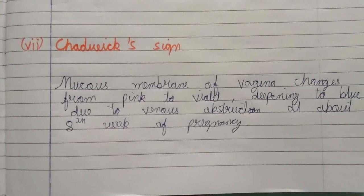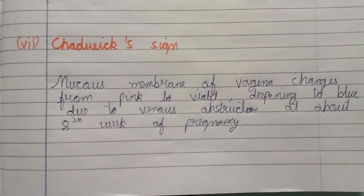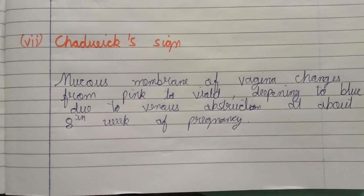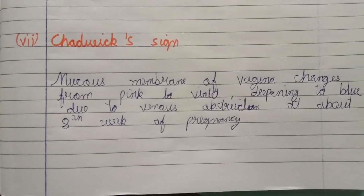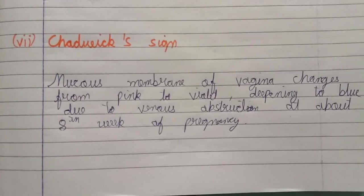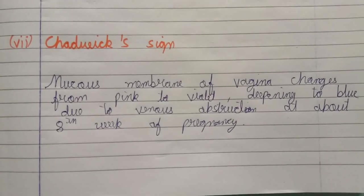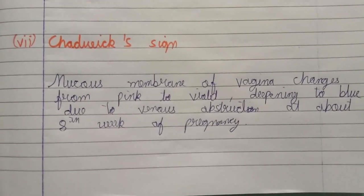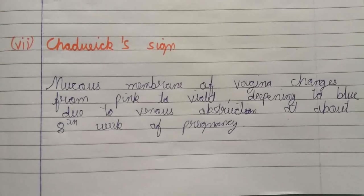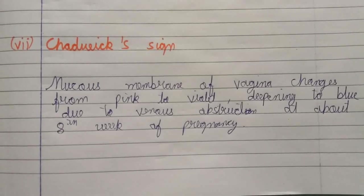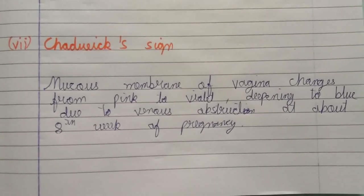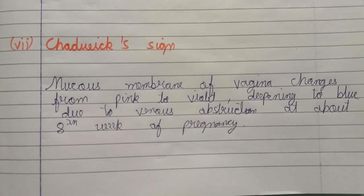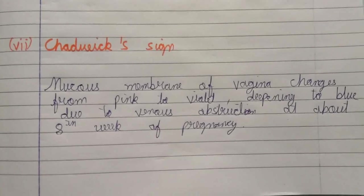The sixth sign is Chadwick sign, which is a very important sign. The mucous membrane of the vagina changes from pink to violet and then deepens to blue. This occurs due to venous obstruction at about the eighth week of pregnancy.